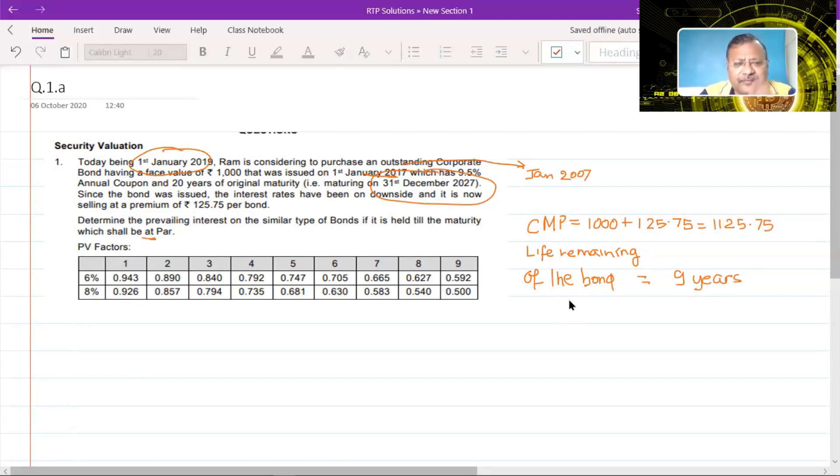Now we are required to find the yield on a similar bond, a bond which has got 9 years left till maturity. Now how do you find the yield of a bond if the price is given? See, normally when the yield is given and you are required to calculate the price, then we use the PVA factor and discount the cash flow of the bond to find the price. But in this case, they have not given the price and we are required to find the yield.